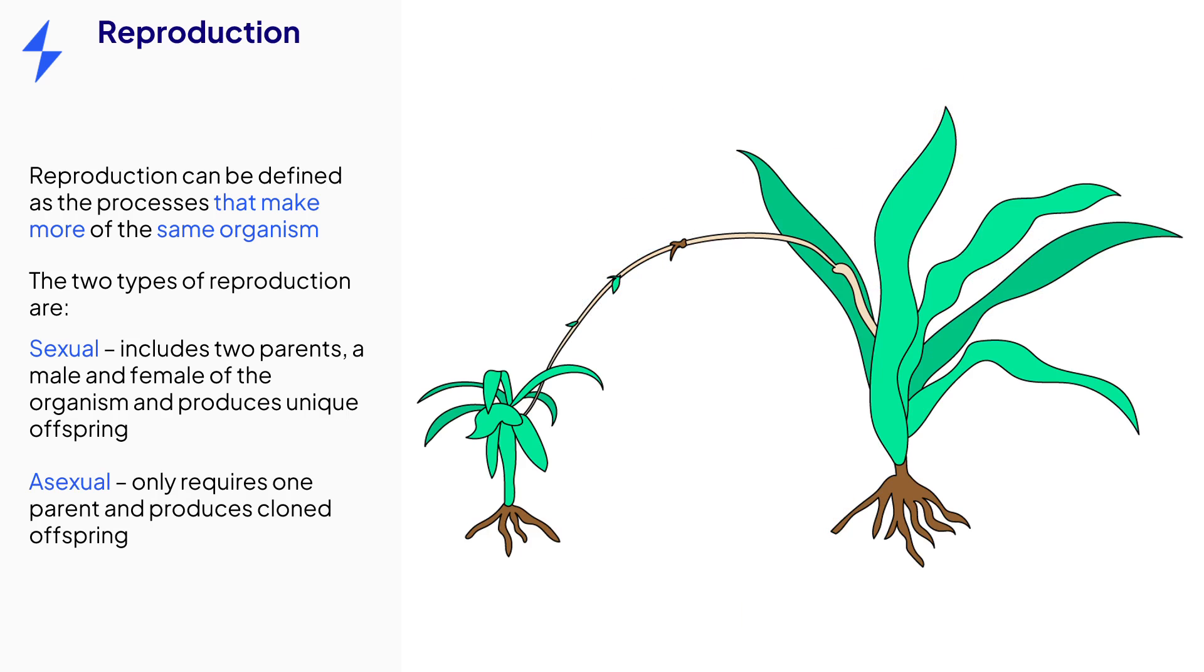In contrast, asexual reproduction requires only one parent. And the offspring are all genetically identical to each other and this parent. This is common in the plant world and is how plant cuttings are made.